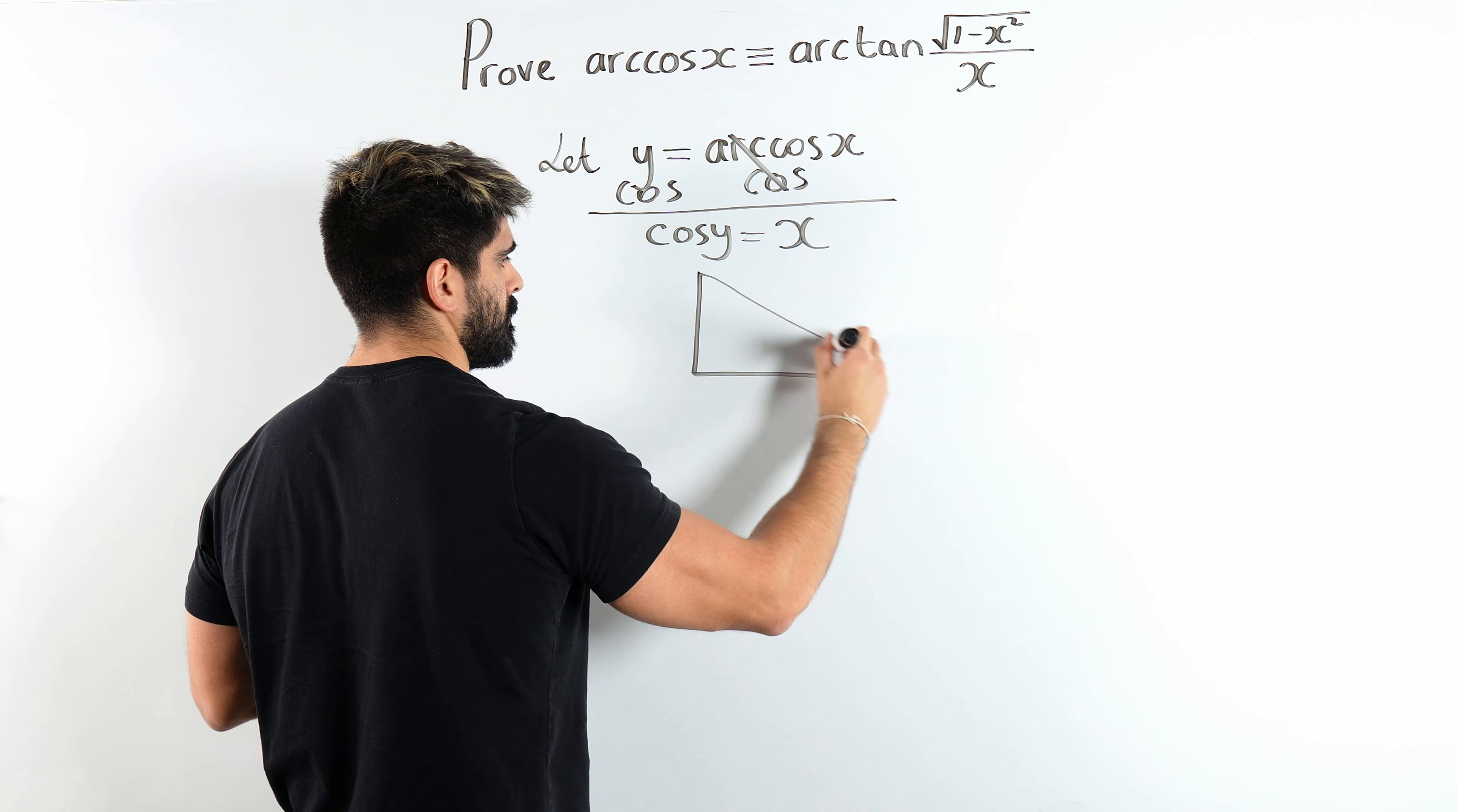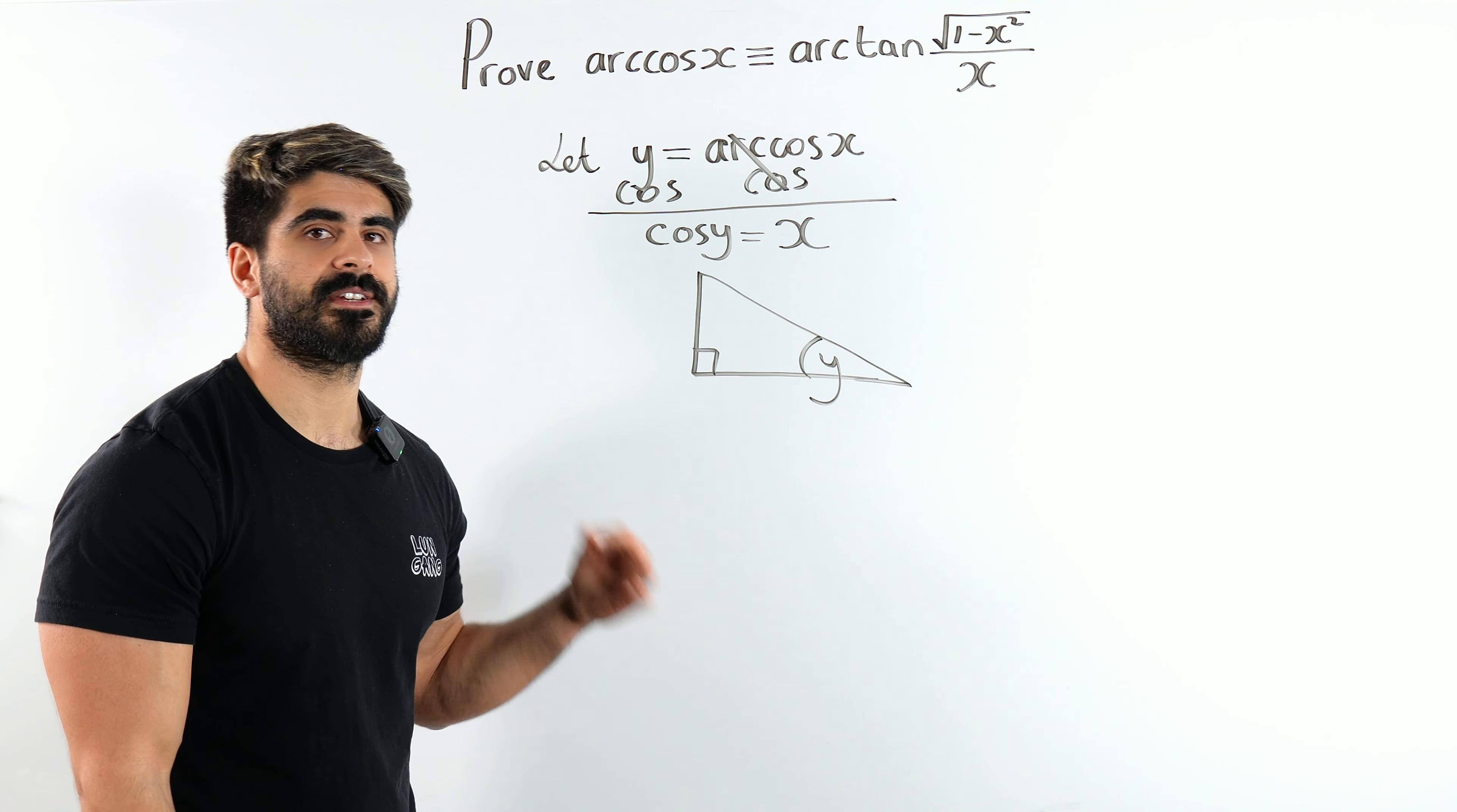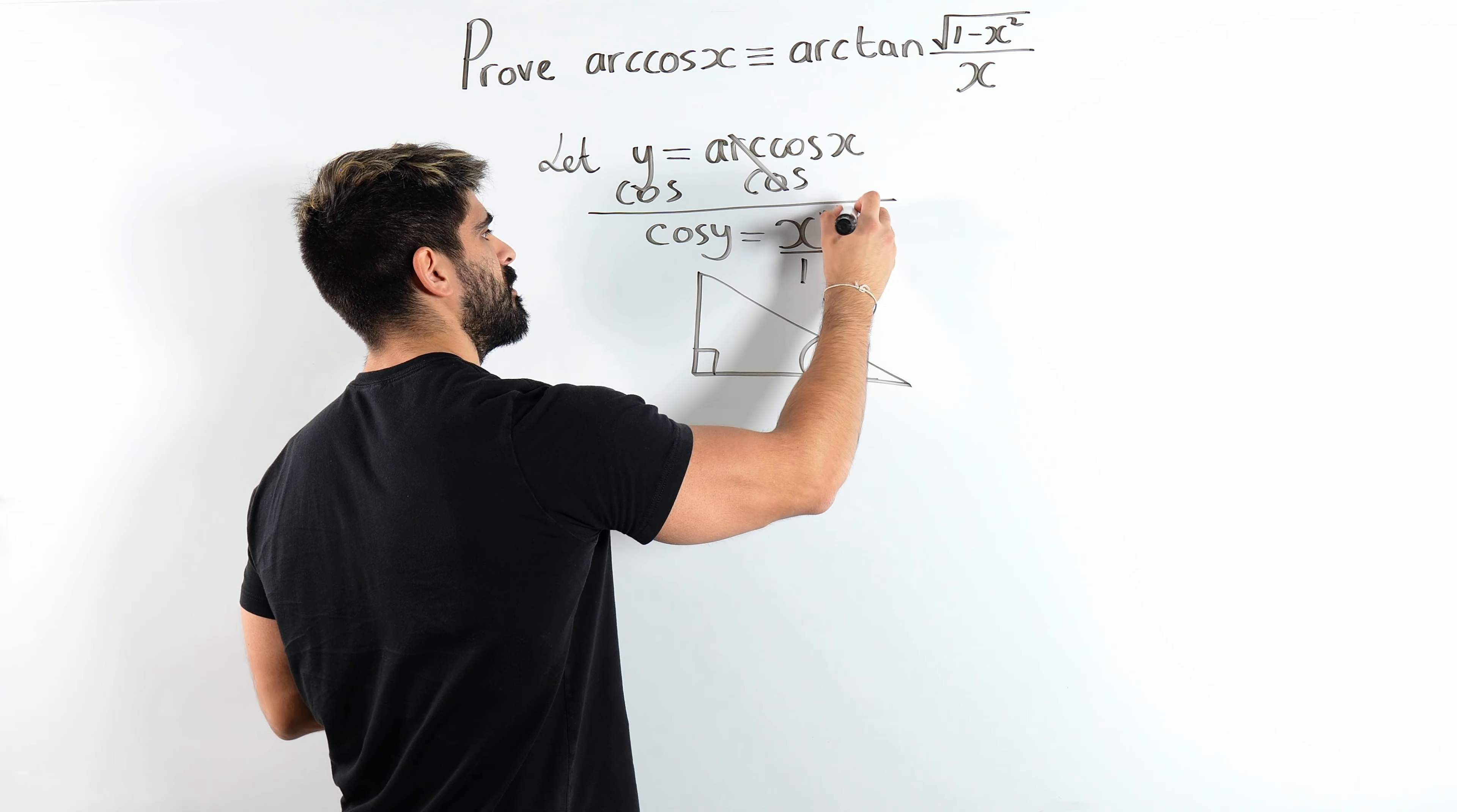Now, here I'm going to be thinking about a right-angled triangle. Let's draw it. We have a right-angled triangle where the angle is y. Now, what does cos measure? It measures the ratio between the adjacent side and the hypotenuse. So this x I'm going to write as x over 1.